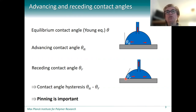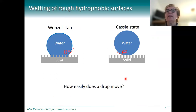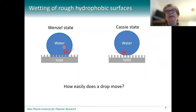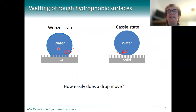So how strongly is the droplet pinned on the surface? For real surfaces, we often also need to consider roughness, as real surfaces are rarely smooth. Here you see a droplet resting on a hydrophobic surface, and the droplet can completely wet the rough surface underneath.